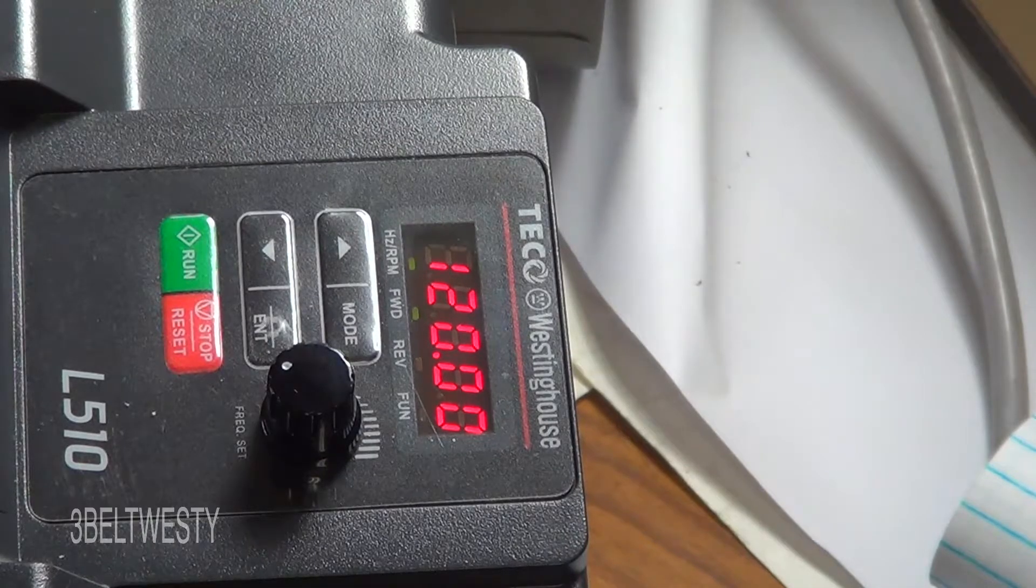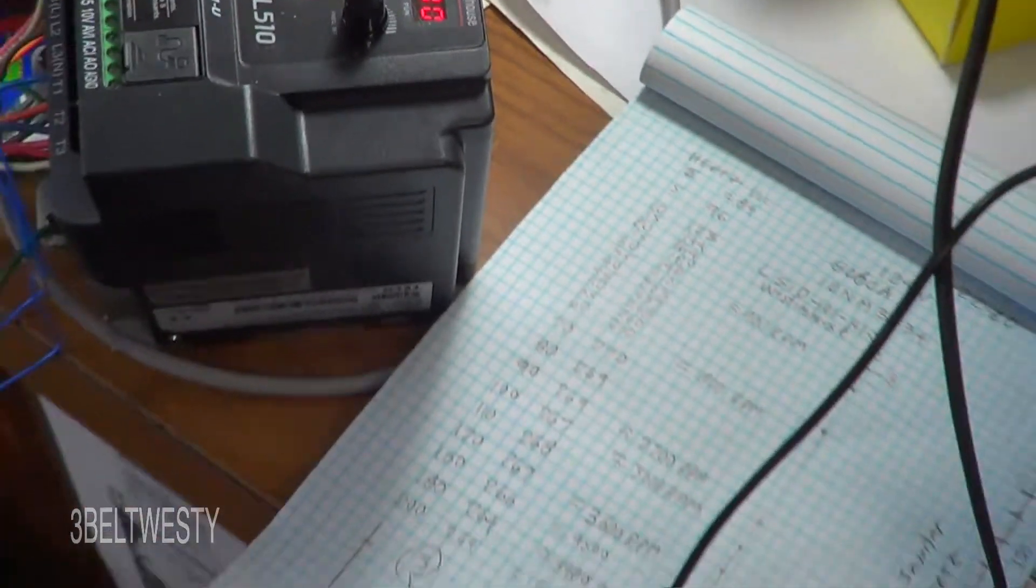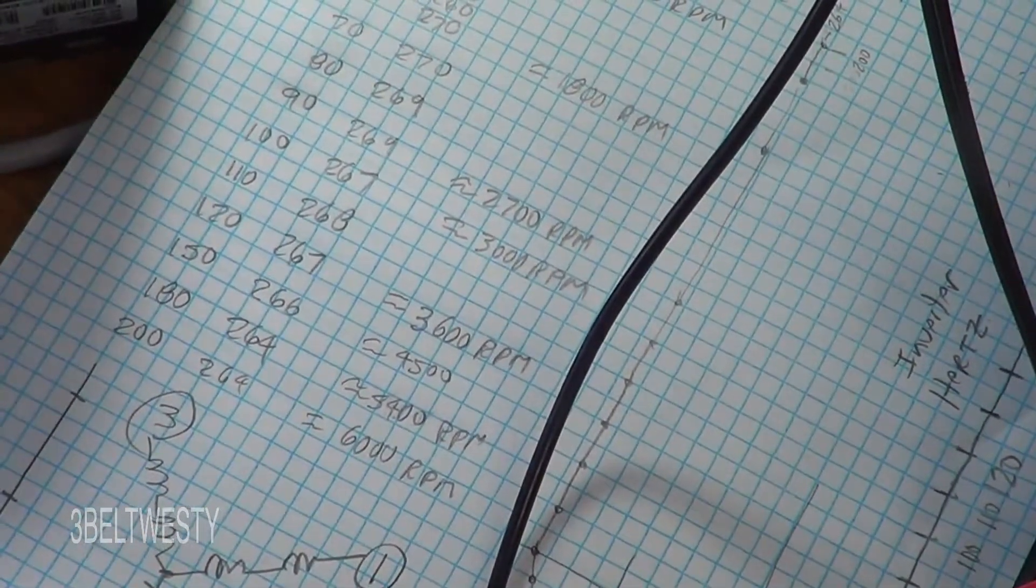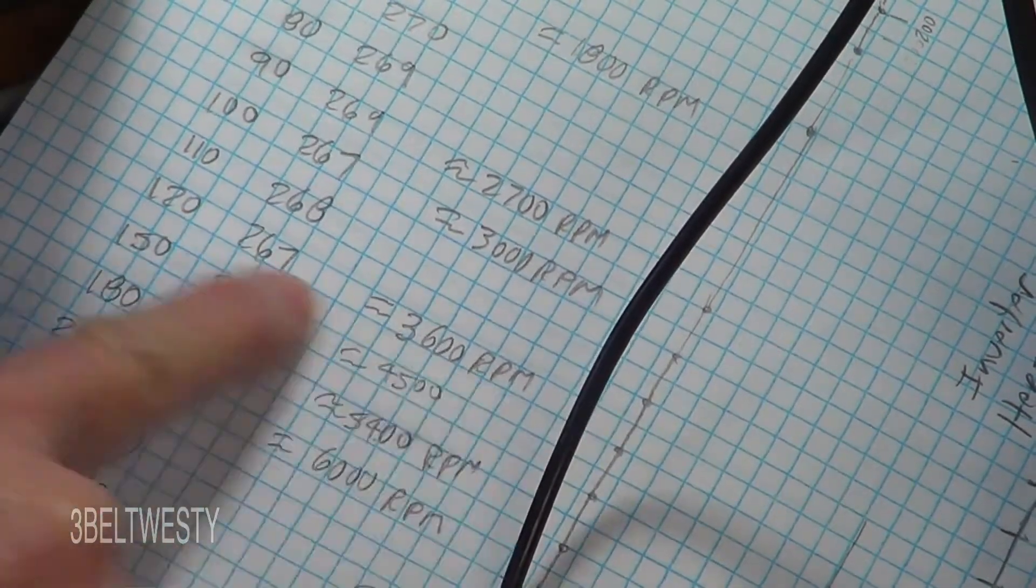I'm using the keypad instead of the pot. That is 120 hertz, which is down here - 3600 RPM.